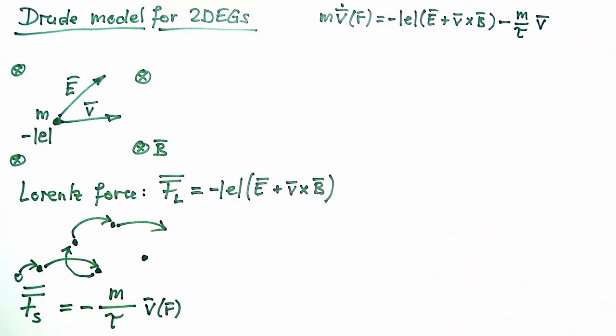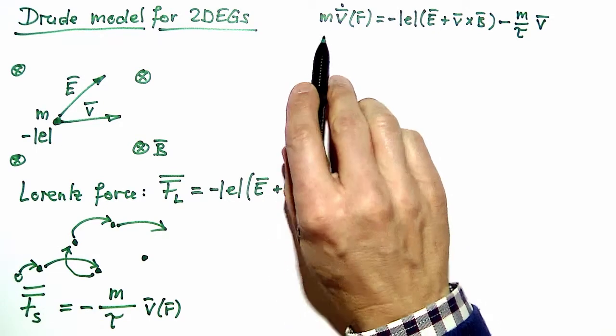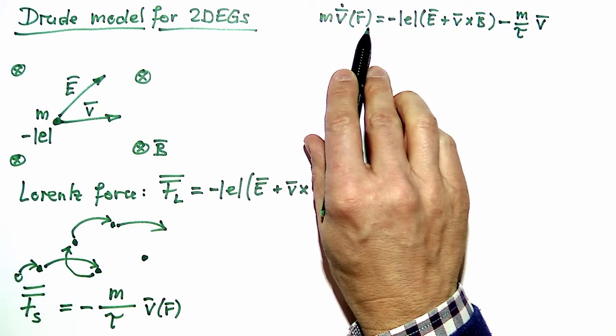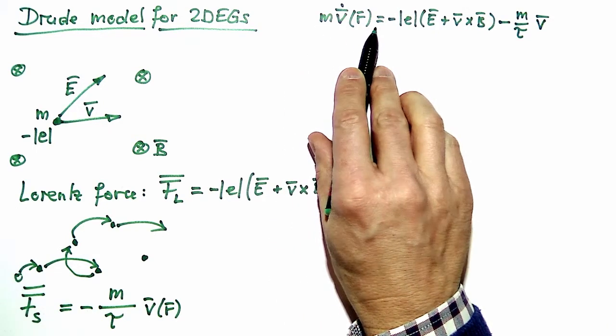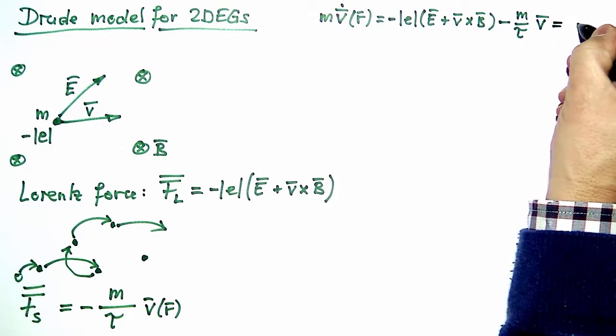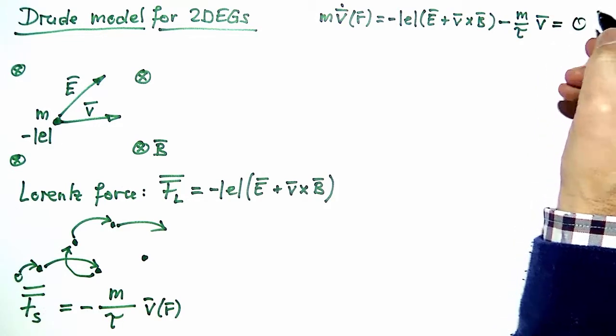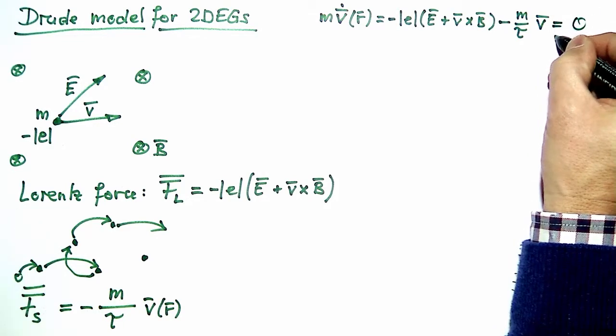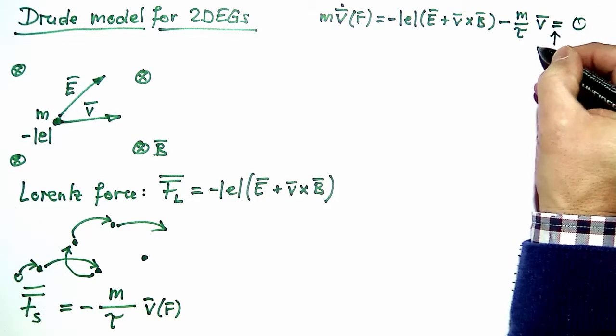In a steady state situation, the local average velocities in the electron gas do not change in time, so the acceleration term is zero. For steady state conditions we can therefore set this expression to zero.